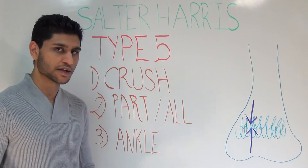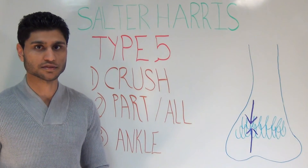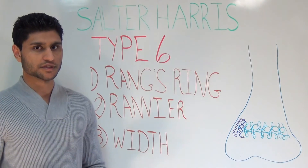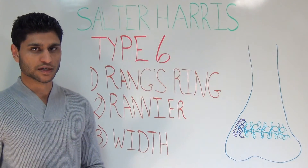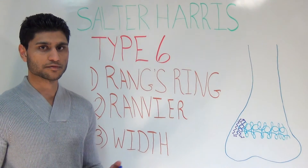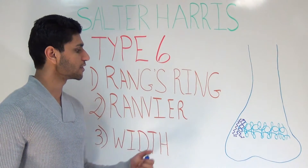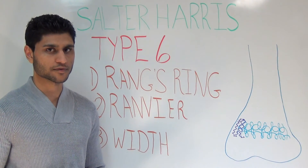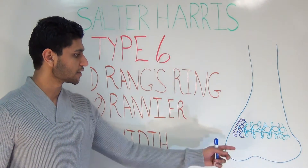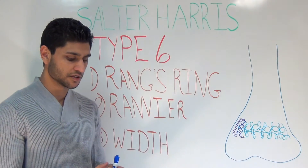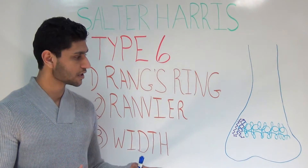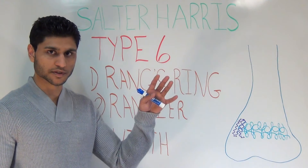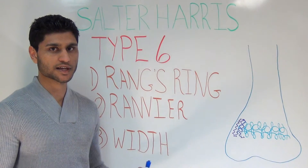Type 5 fractures tend to occur in the ankle or sometimes the knees if a child falls from a height. A type 6 is known as a Rang-Zurin fracture and is an injury to the zone of Ranvier. The zone of Ranvier is responsible for providing chondrocytes so that the growth plate can continue to expand in diameter. If an injury occurs here, the bone will still grow longitudinally, but it will no longer grow in diameter.